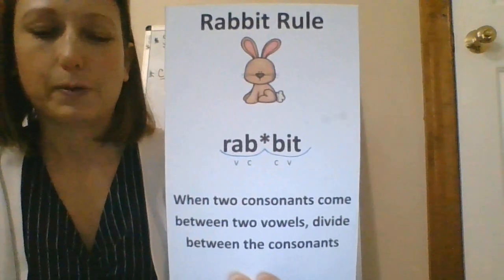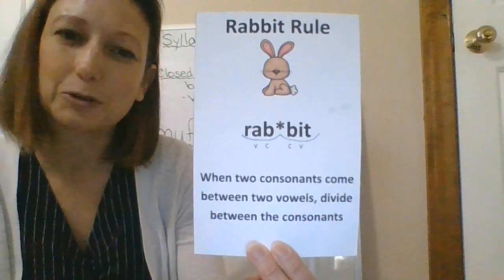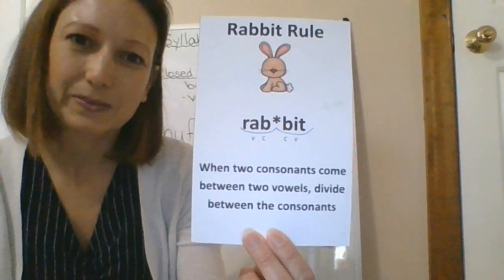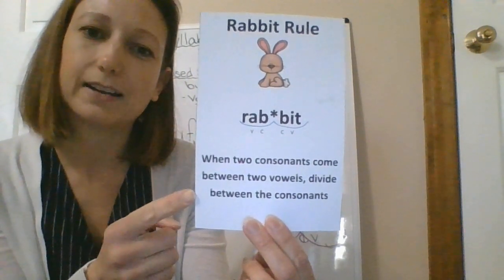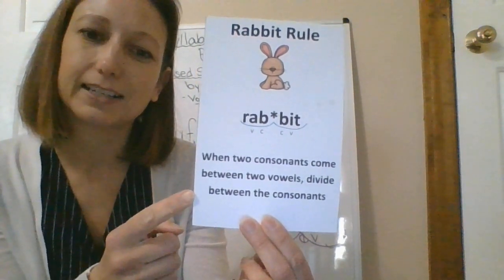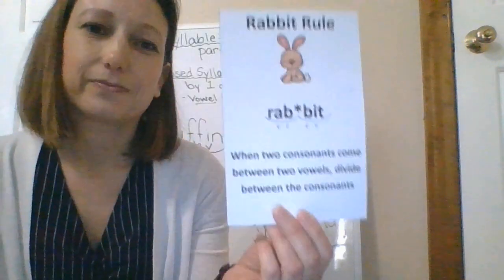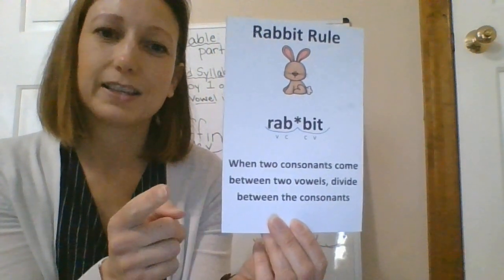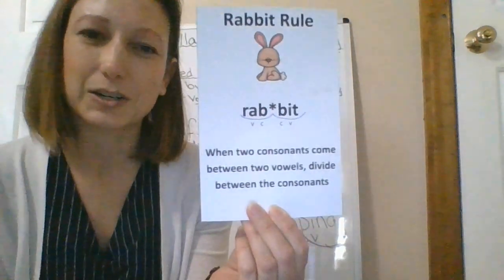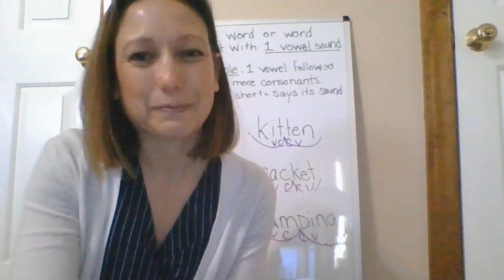So what we worked on today was the rabbit rule for syllable division — because if we can break words into syllables, we can more easily read them and spell them. The rabbit rule: when two consonants come between two vowels, divide between the consonants. Thank you for working with me, and I will see you again soon. Bye-bye.